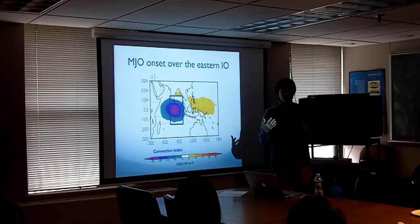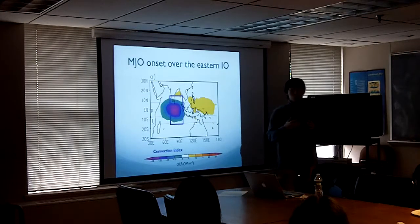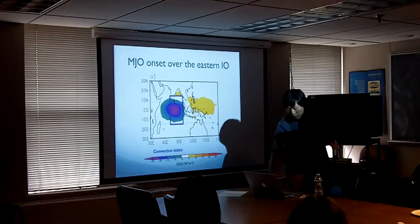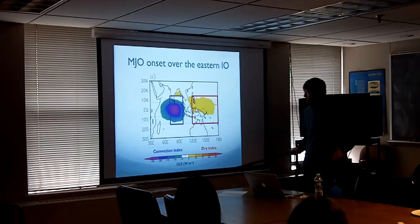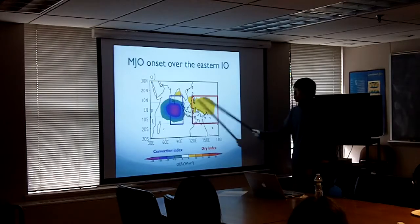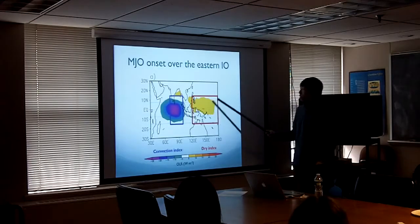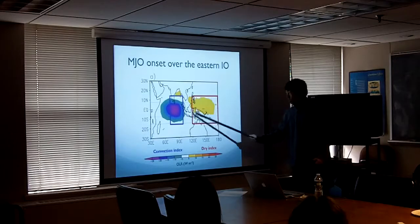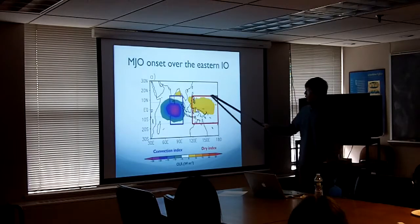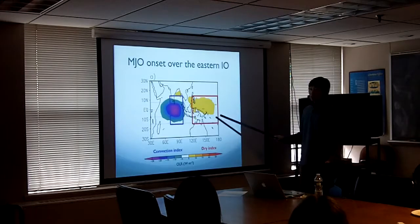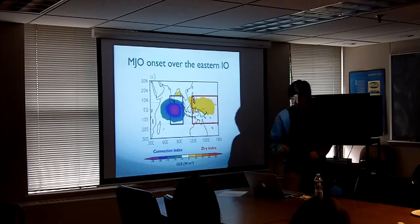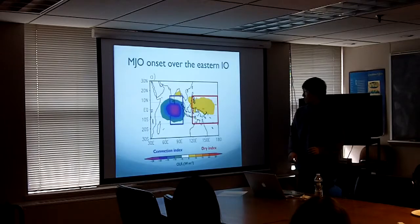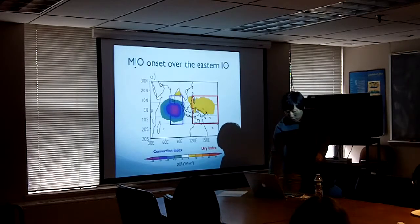We examined every event for how they make propagation and what controls the propagation. What we found is that whether this convection makes propagation or not depends on the state of the Western Pacific. I'll explain how and why in a moment.